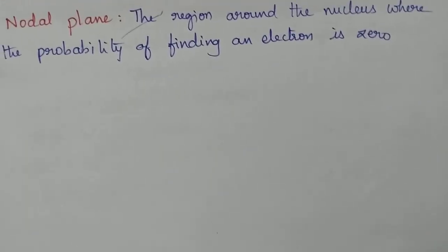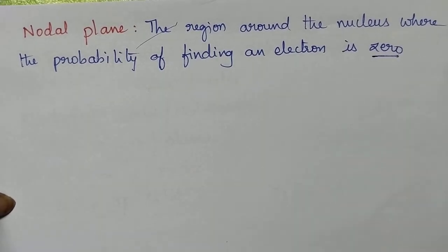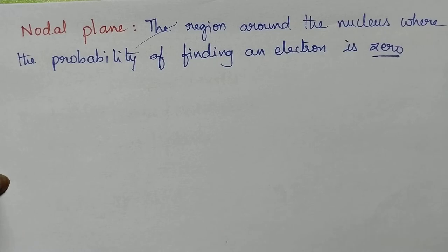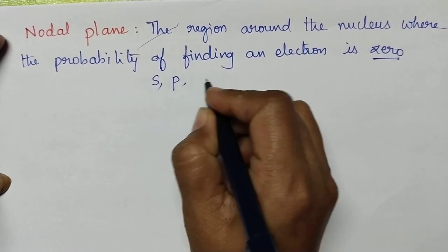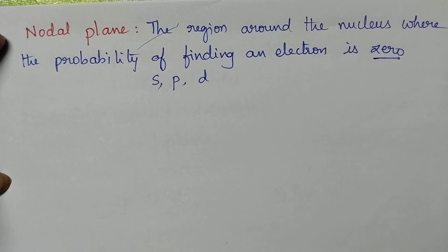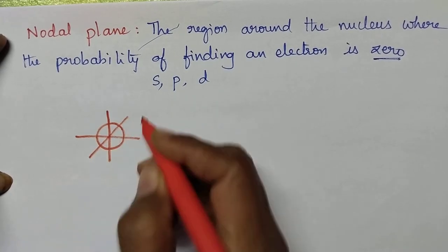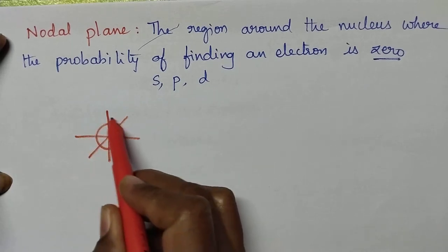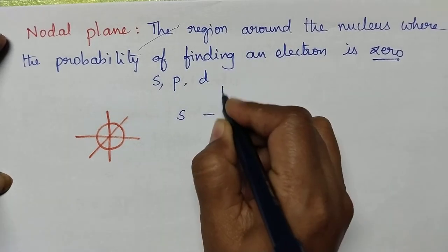Next, we will discuss about the nodal planes. Nodal plane means the region around the nucleus where the probability of finding an electron is 0. In the case of s-orbital, since probability exists in all directions, the number of nodal planes is equal to 0.